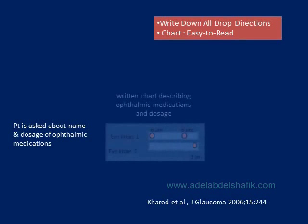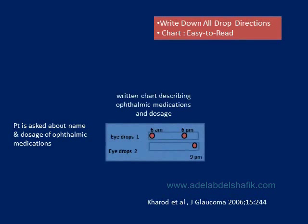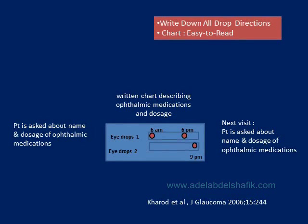Give clear information to the patient — make a chart or printout: drop number one, apply at 6 a.m. and 6 p.m.; drop number two, apply at 9 p.m. Check with the patient that they know the drug name and frequency, to make sure they understand what they should do. On the next visit, ask again about the names and timing of application.